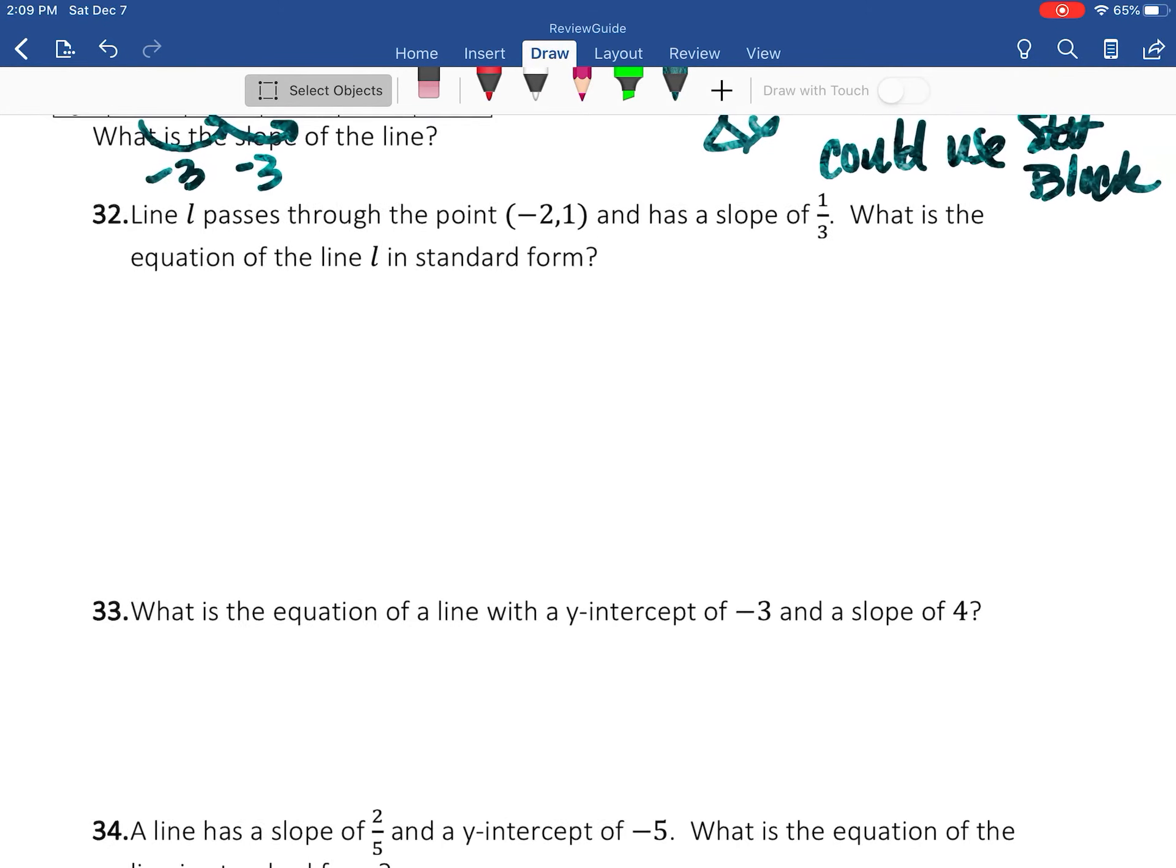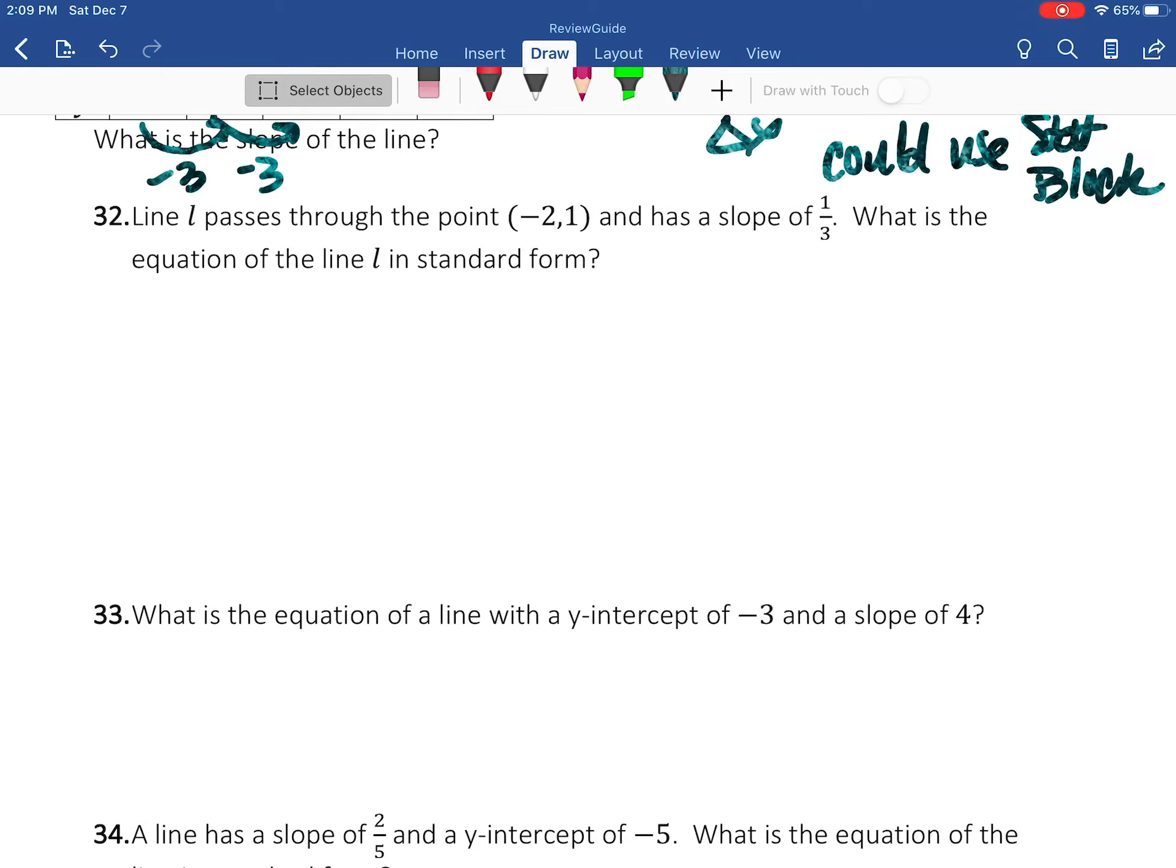All right, so number 32: the line L passes through the point (-2, 1) and has a slope of 1/3.